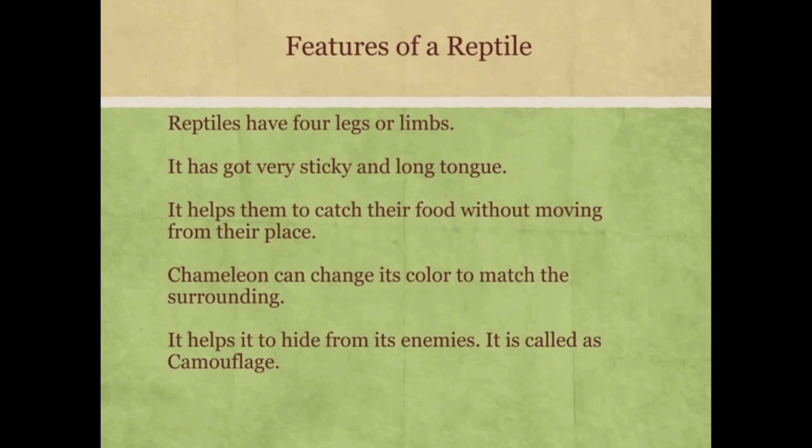Reptiles have four legs or limbs and a very sticky, long tongue that helps them to catch their food without moving from their place. The chameleon can change its color to match its surroundings, which helps it hide from its enemies. This is called camouflage.